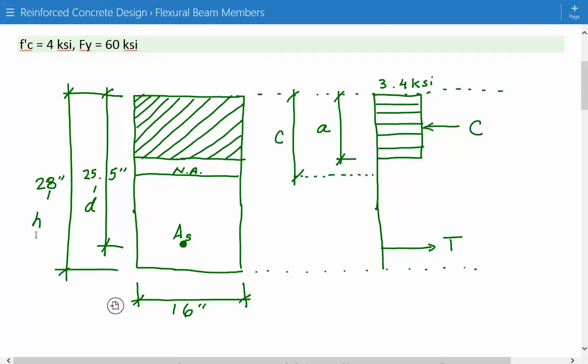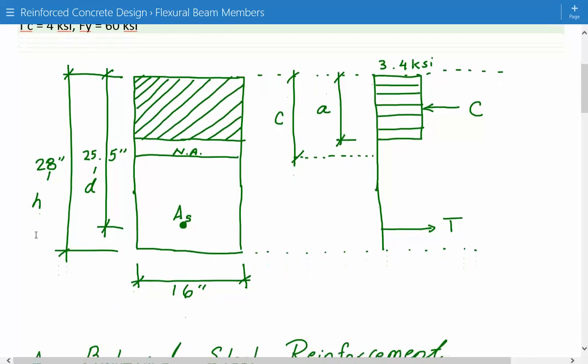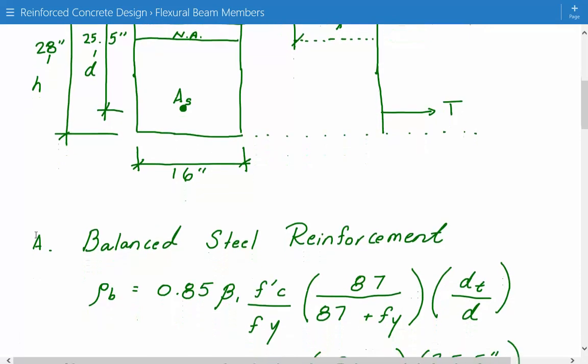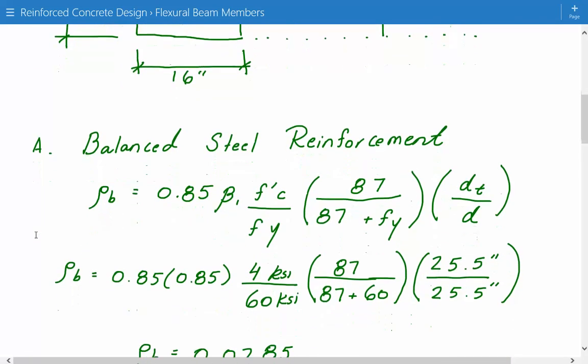If we had two rows, then DT and D would be two separate values. But in our case they're just going to be equal to one, so 25.5 divided by 25.5, that just equals one. So we calculate the reinforcement ratio ρb is equal to 0.0285.